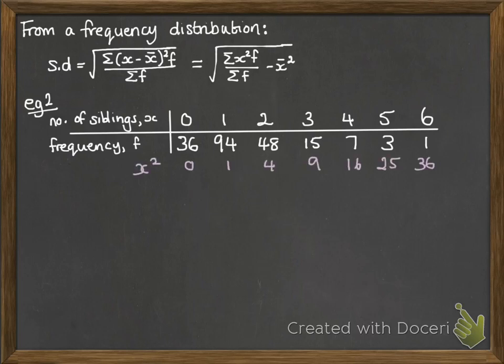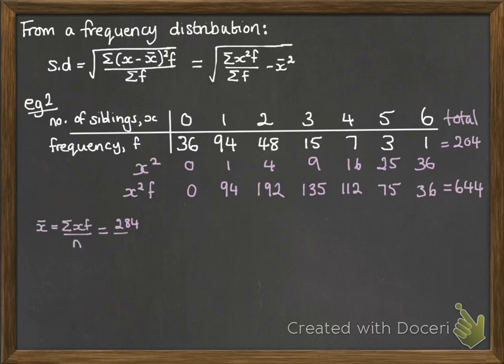So first of all, we need to work out those x squared values because we're going to then times them by f. Next line is when we do times it by f. Those are the numbers that we get. We also need to total up those frequencies and the x squared f line because we're going to need both of those sum values.